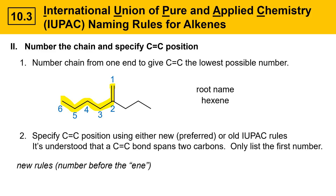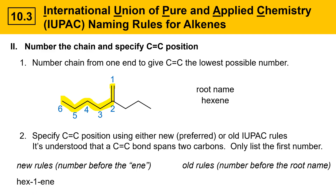Under the new IUPAC rules, the locator for the double bond is placed before the -ene ending, and it would look like this: hex-1-ene, where the one is sandwiched between the hex and the ene. Those are the new rules. Under the older rules, the number is placed in front of the root name, which would be 1-hexene. Either one of these two naming systems is acceptable — they both get used pretty frequently and you'll see them used somewhat interchangeably.